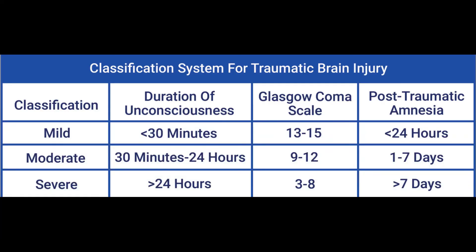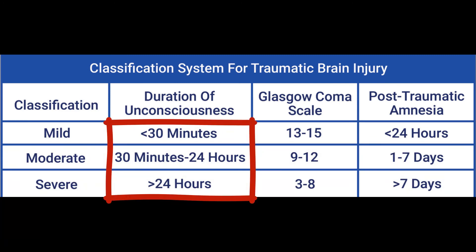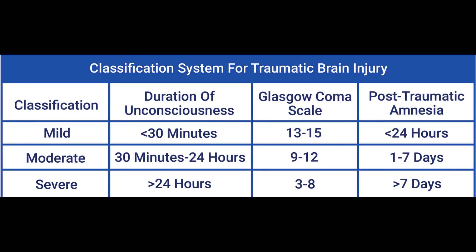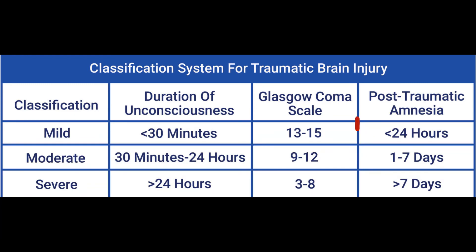To end this video, we will cover the classification for traumatic brain injury. You need to keep in mind the duration of unconsciousness, the Glasgow Coma Scale, and post-traumatic amnesia. Mild is less than 30 minutes unconscious, moderate is 30 minutes to 24 hours, and severe is more than 24 hours. For GCS: mild is 13–15, moderate is 9–12, and severe is 3–8. For post-traumatic amnesia: mild is less than 24 hours, moderate is 1–7 days, and severe is more than 7 days.